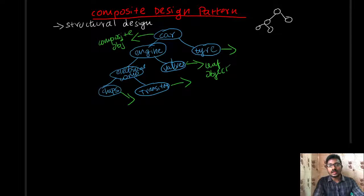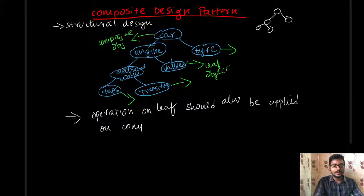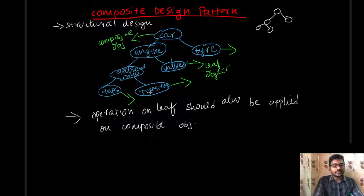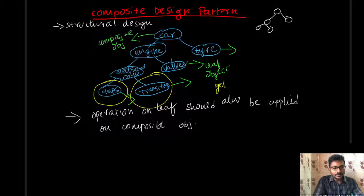So the engine is a composite object, and the electrical component is also a composite object. The engine contains the electrical composite object and the valve leaf object. This is the composite design pattern structure. The second rule of composite design pattern is: if you apply an operation on a leaf object, that operation should also be applied on a composite object. For example, you can get the price of the car object.